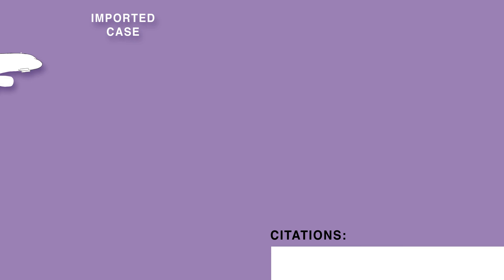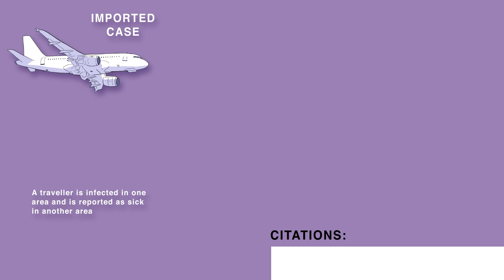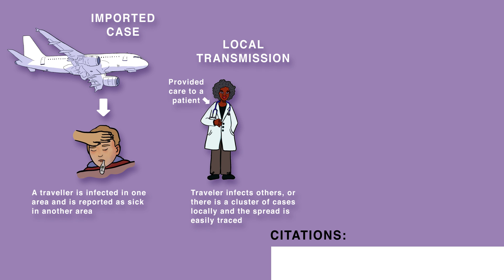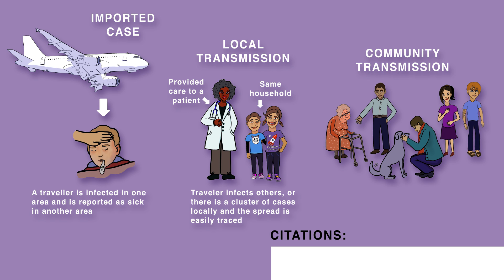An imported case occurs when a traveler is infected in one area and is reported as sick in another area. Local transmission occurs if that traveler infects others, or if there is a cluster of cases locally and the spread is easily traced. Community transmission occurs when there is no clear source of infection.